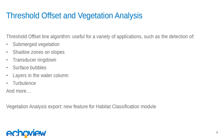Starting with the threshold offset operator and the vegetation analysis, as I know a lot of people were particularly interested in this. The threshold offset line algorithm is useful for a variety of applications such as the detection of submerged vegetation, shadow zones on slopes (sometimes called dead zones or roll-off), transducer ring down, surface bubbles, layers in the water column, turbulence, and a whole lot more. The threshold offset algorithm works by starting from a pre-existing line and then finding the depth at which sample values in a ping first cross a threshold of decibels. I'll demonstrate this with a couple of quick examples in ECOVIEW.